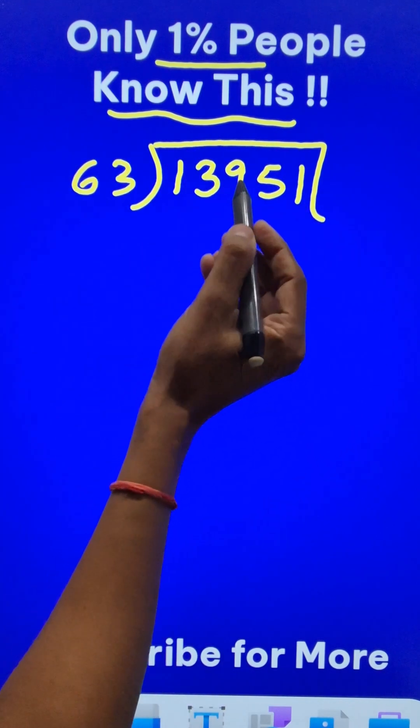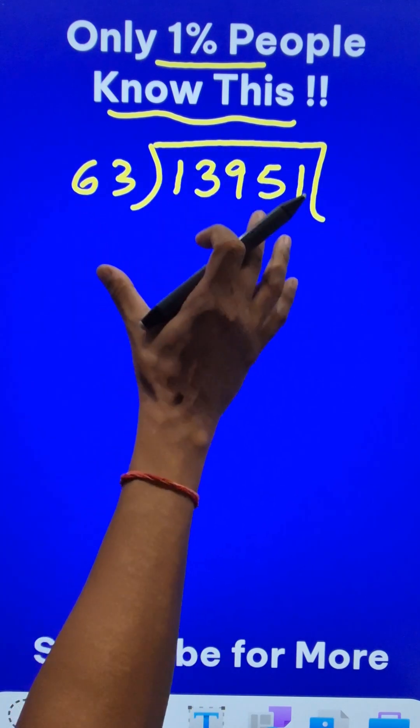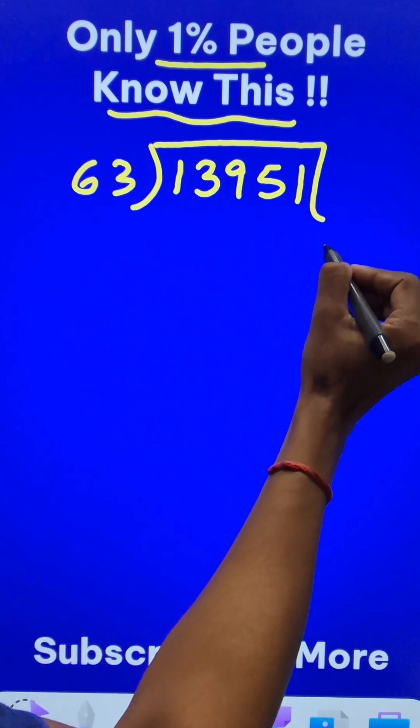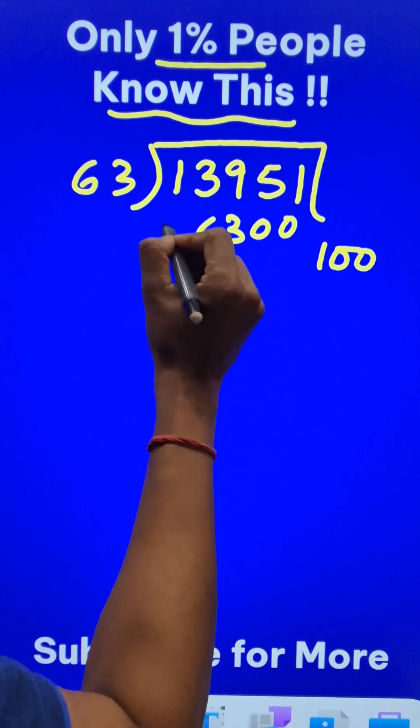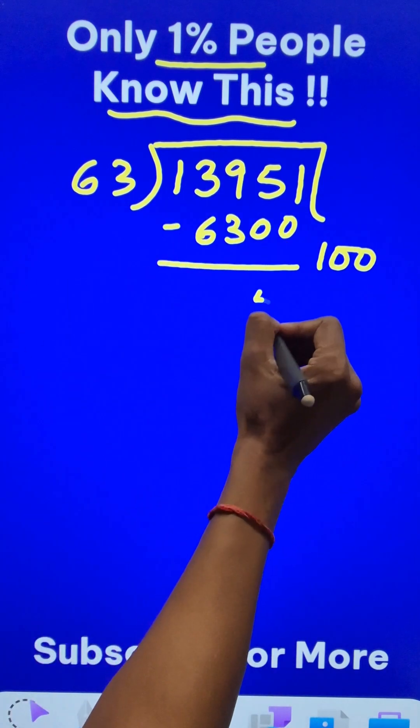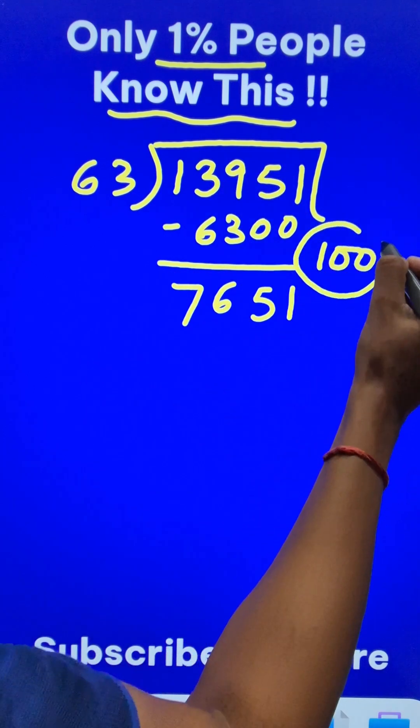But we can do it through partial quotients. We will not find the quotient directly, but we will find it partially. So, 63 times 100 is 6,300. I am going to subtract 6,300 from this. That gives me 7651. Now, this is one of my partial quotients.